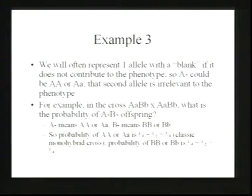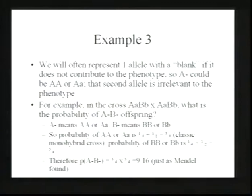You can do higher levels of crosses as well. To summarize what we did: we found the probabilities of big A, big A OR big A, little a, and the probabilities of big B, big B OR big B, little b. Then, in the offspring, we knew we had to have both of those happening at the same time. So we multiply those probabilities using the AND rule and find that the probability of big A blank, big B blank is nine-sixteenths.